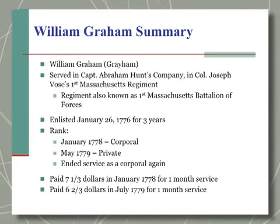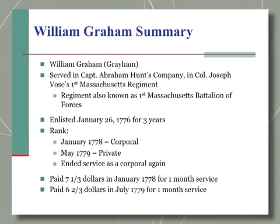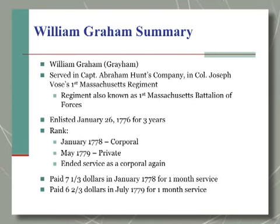As we saw on the outside of the jacket, he ended his service as a corporal, so whatever happened, he must have redeemed himself and regained his original rank, though the records don't specifically indicate what might have happened. To summarize the basic information found in this compiled service record: his name is William Graham; he served in Captain Abraham Hunt's company of Colonel Joseph Voge's 1st Massachusetts Regiment, also recorded as the 1st Massachusetts Battalion of Forces. He enlisted January 26, 1776 for three years, holding the rank of corporal, then demoted to private, but ending his service as a corporal again. The records also show the various pay rates he received during his service.